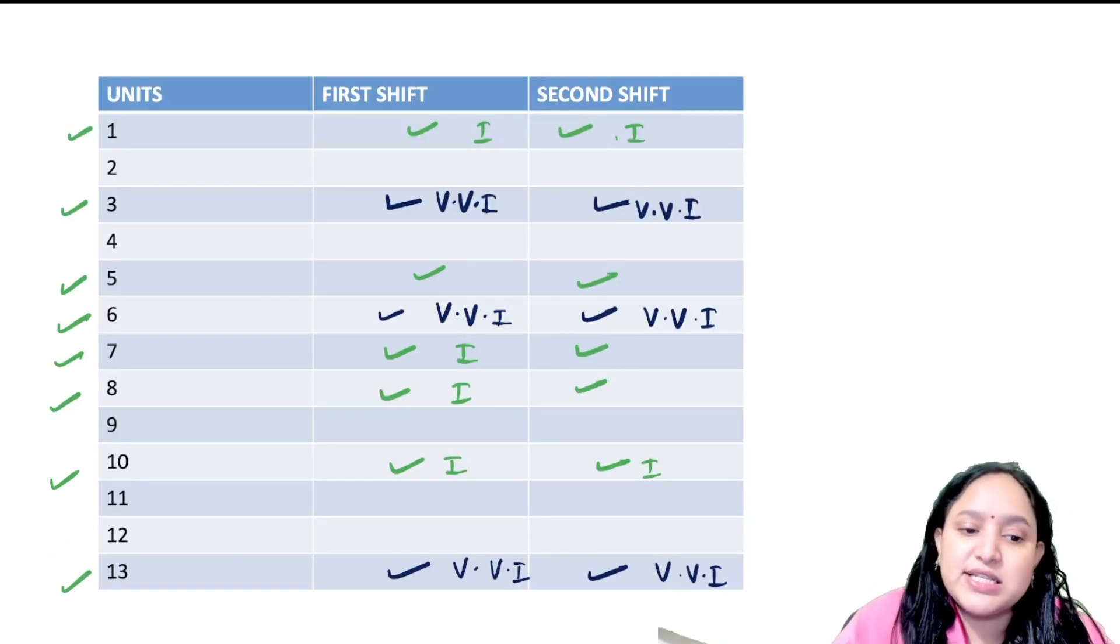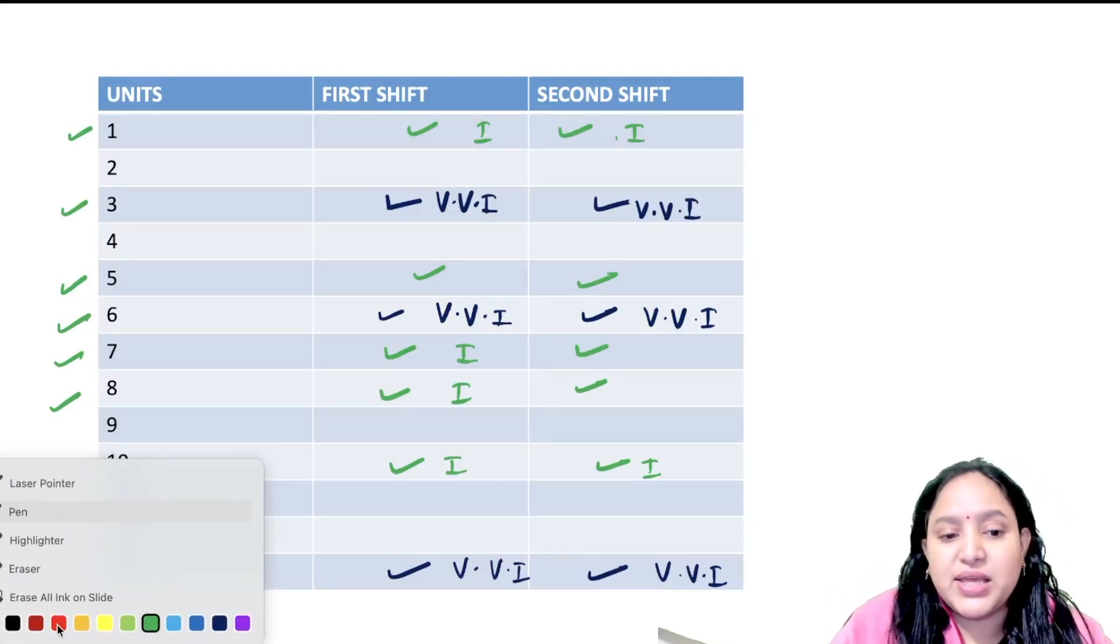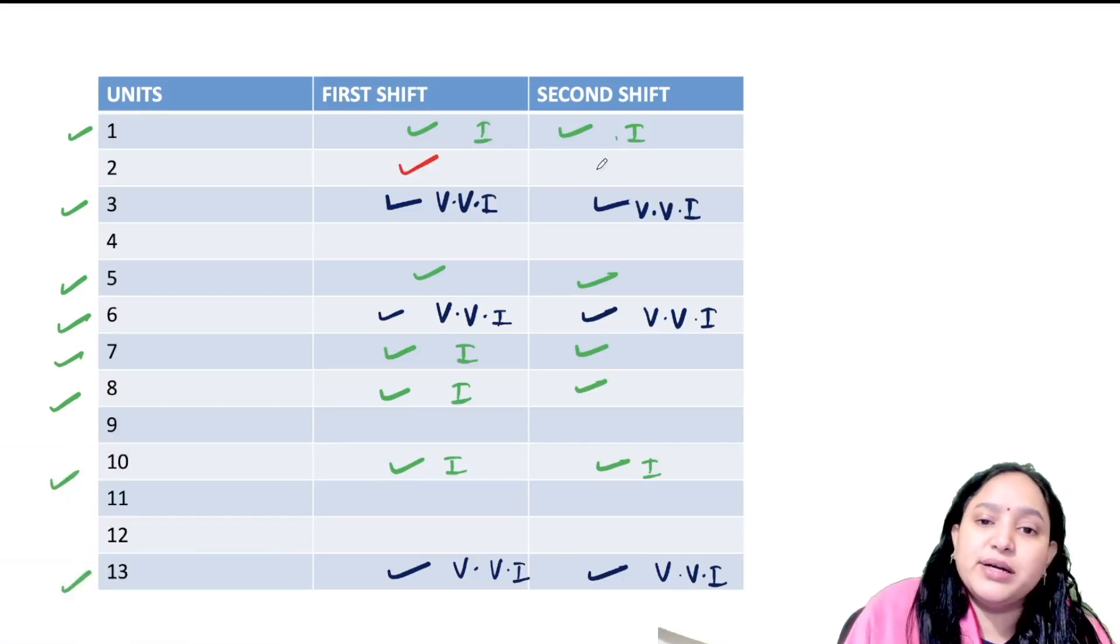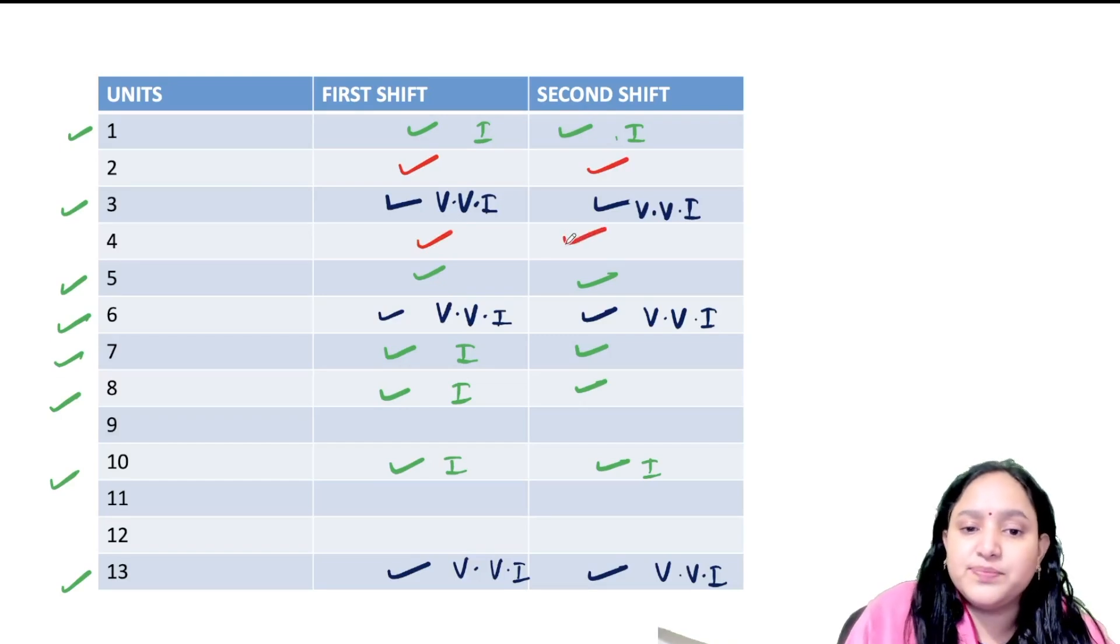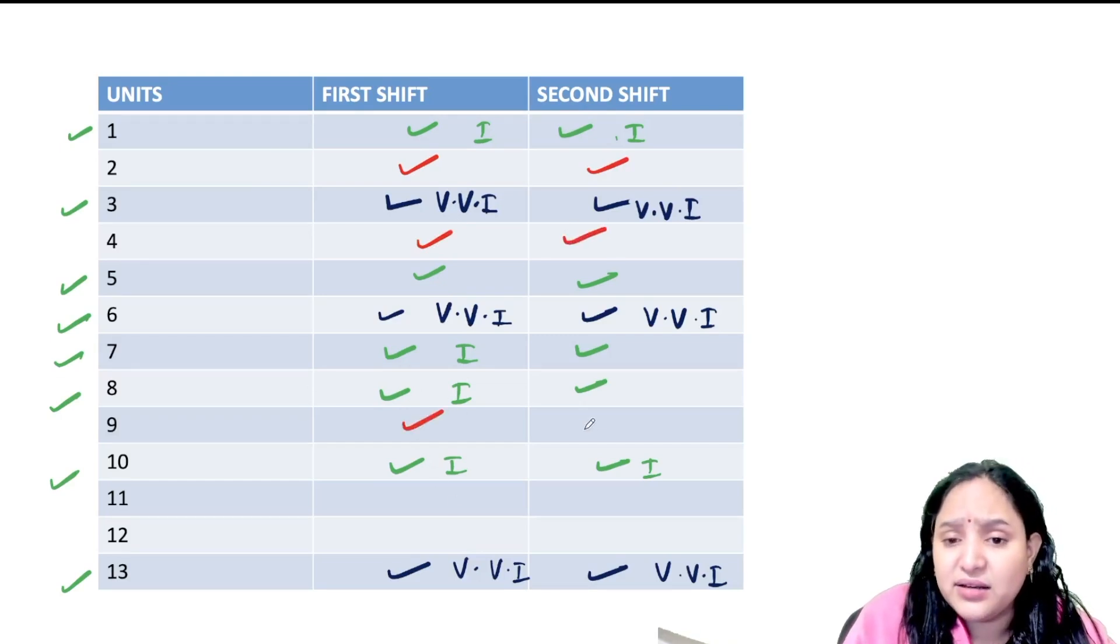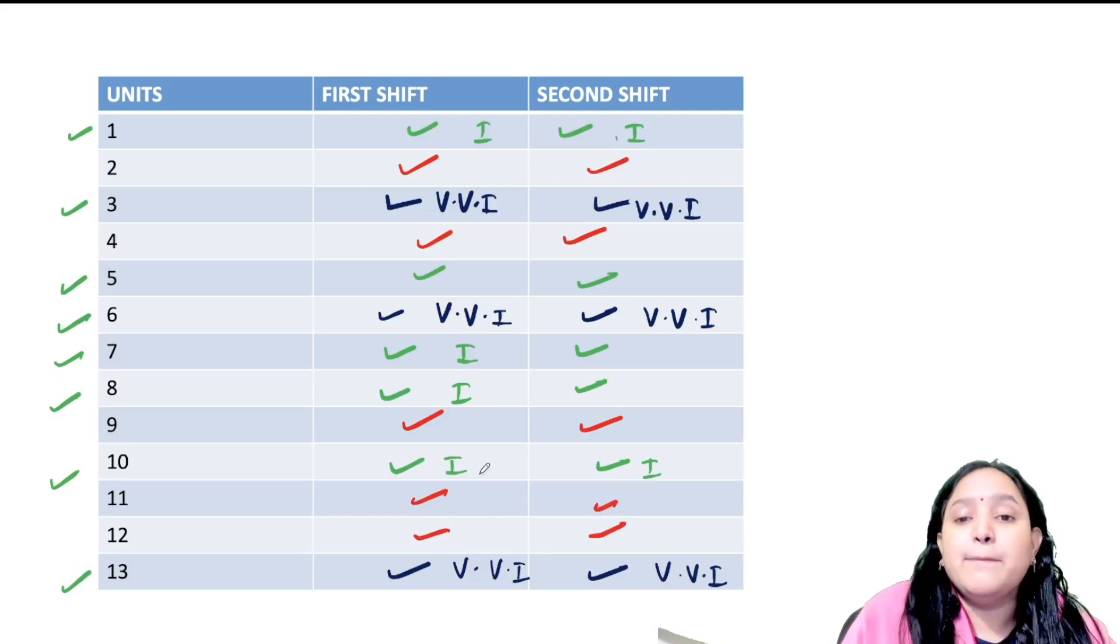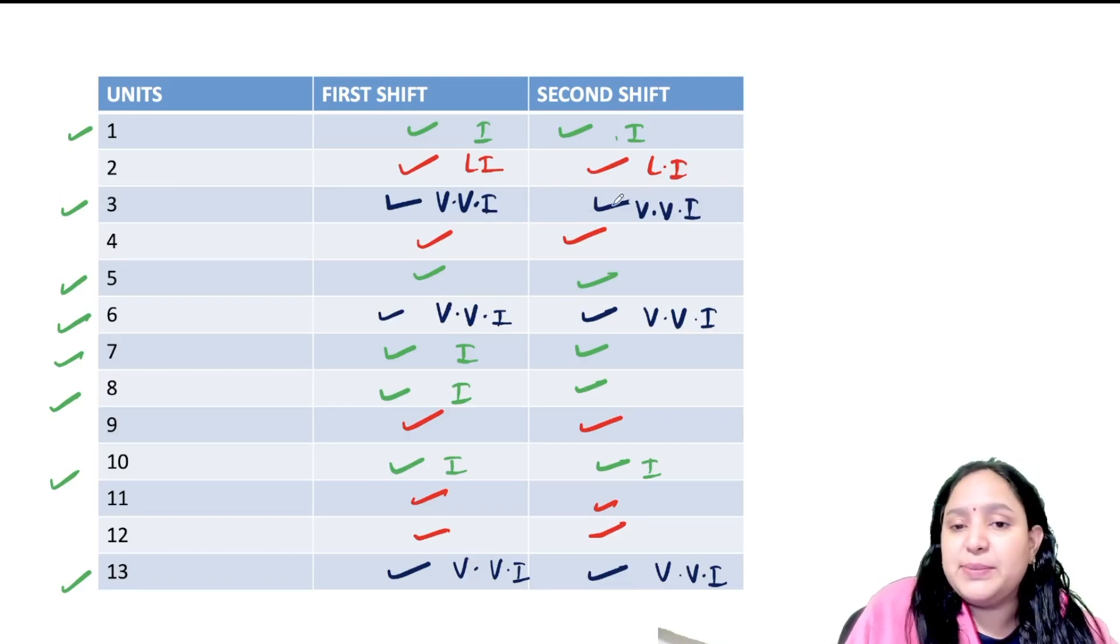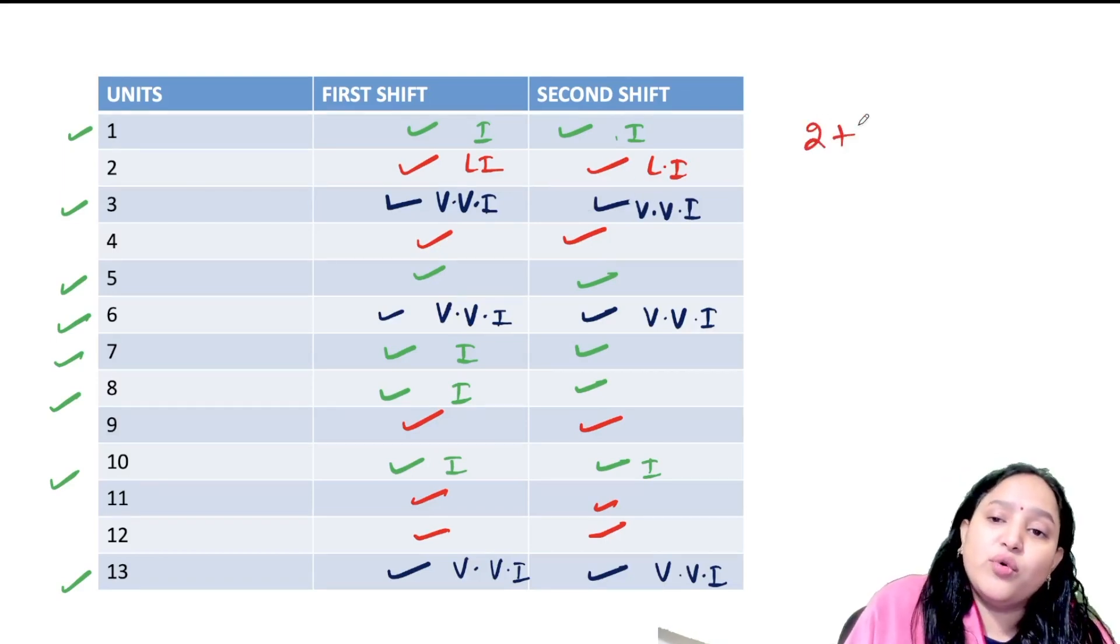Comparatively, if we look at it, unit number 2, unit 4, unit 9 and 11, 12. When I tell you that it is the least important category, so you have to keep this - units 2 and 4.